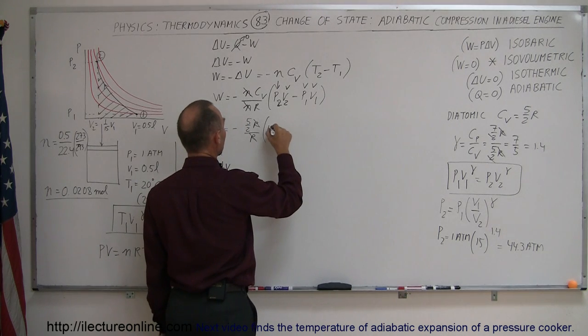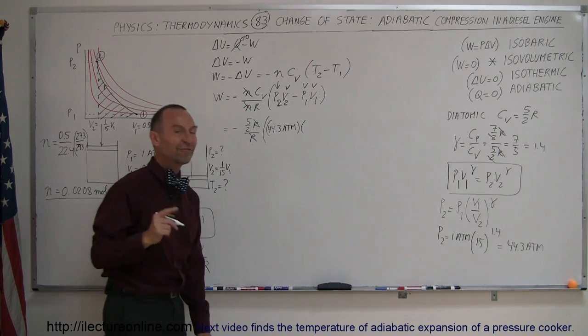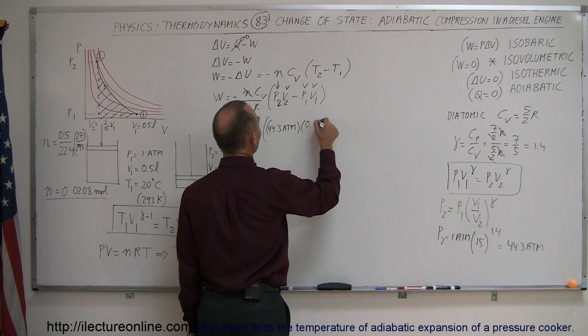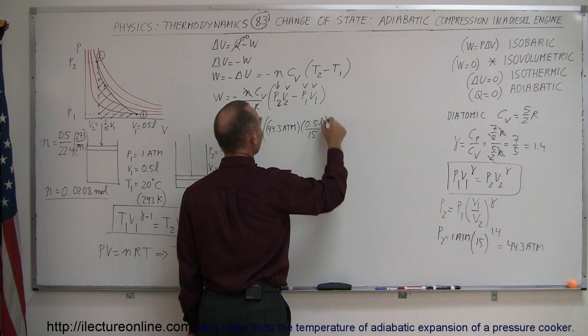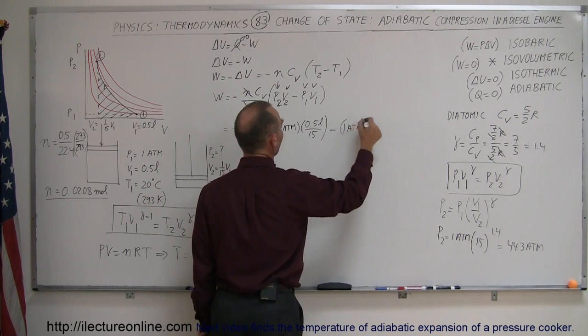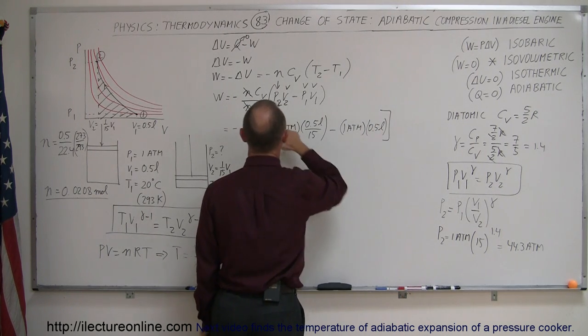P2, 44.3 atmospheres, multiplied times V2, which is 1/15th the original volume. The original volume was 0.5 liters. Divide that by 15. Minus pressure 1, which is 1 atmosphere, and volume 1, which was 0.5 liters, the original volume. Maybe I'll just use brackets here.